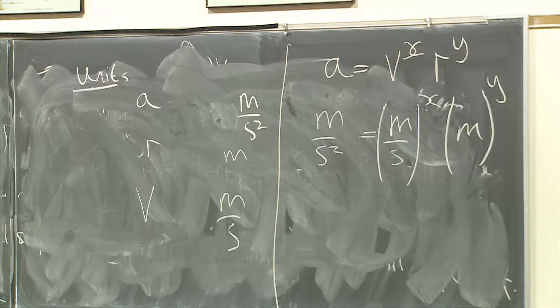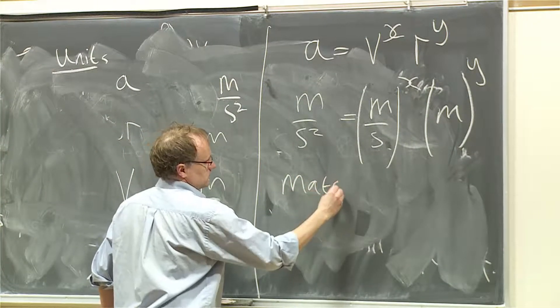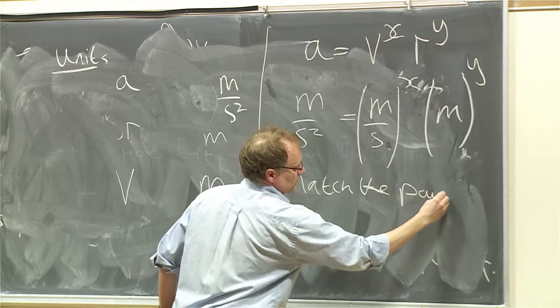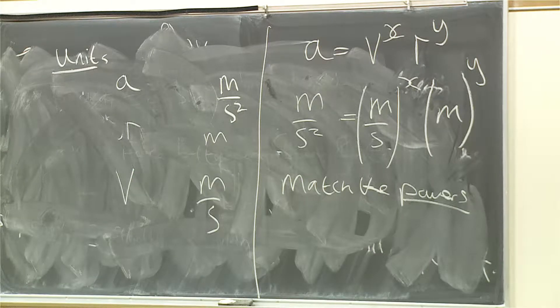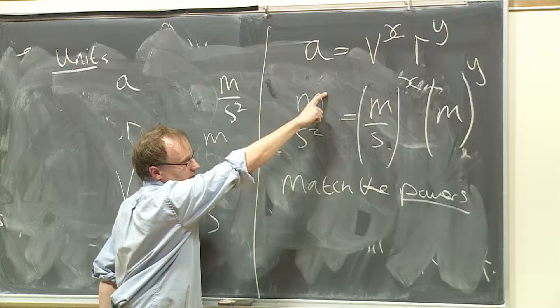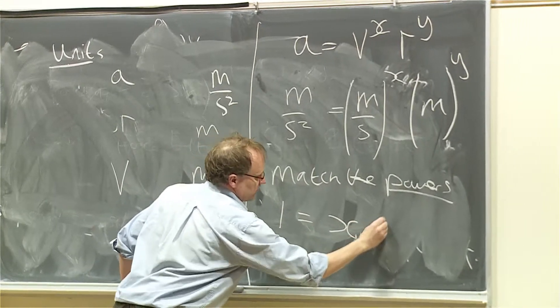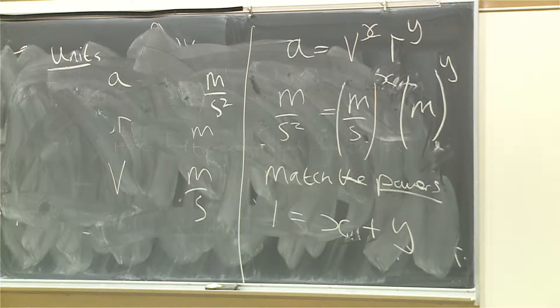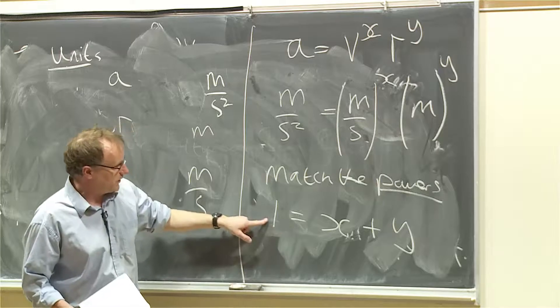And then we solve for X and Y. So you equate the powers. So we match powers. Match the powers. So if we were to match the powers, the powers of meters, we have, what's the power here? It's a 1. So can you see that we have 1 equals X plus Y? Does that make sense? Sometimes people, if you haven't done this for a while. So 1 is equal to X plus Y, because the X is the power here on the M, and Y is also the power on the M. So we have 1 equals X plus Y.